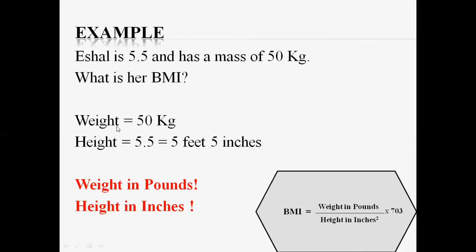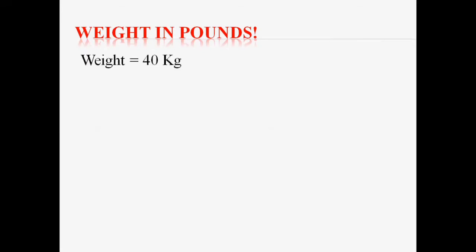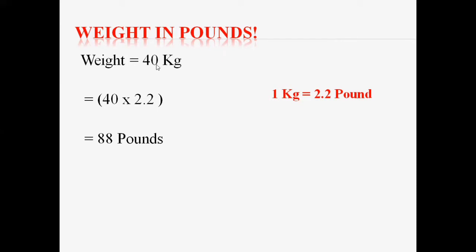Now first we will convert the weight into pounds. The weight given is 40 kg. As you know, 1 kg equals 2.2 pounds. So to convert, simply multiply 40 by 2.2, and 40 kg will equal 88 pounds. So 40 kg equals 88 pounds — now you have converted the units from kg into pounds and it is ready for the formula.